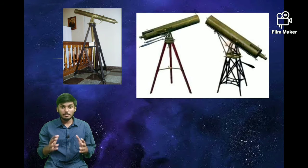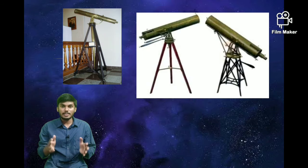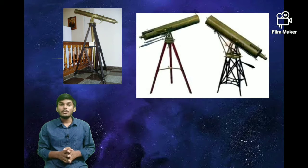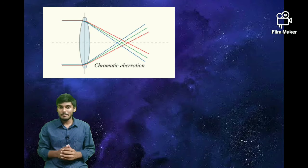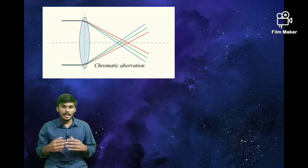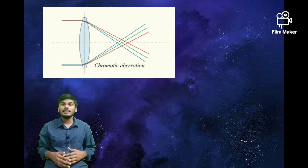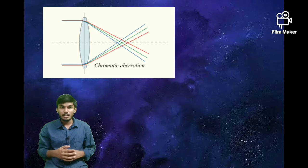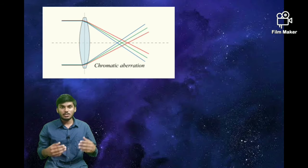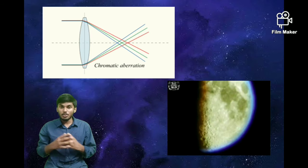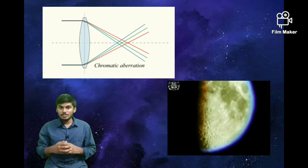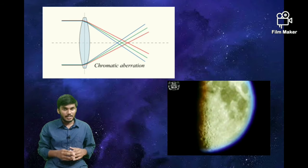If you build a bigger lens, the thickness also increases. If you increase the thickness of the lens, there is one problem which is known as chromatic aberration. When light passes through glass, it divides into its component colors like a prism. When observed through a telescope, you will get a rainbow-type image. This defect was known as chromatic aberration.